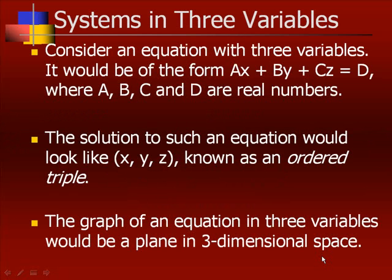Consider an equation with three variables. It would be of the form ax plus by plus cz equals d, where a, b, c, and d are real numbers. Therefore the variables would be x, y, and z. The solution to such an equation would look like an ordered pair, but it would have three parts — x, y, z — known as an ordered triple.